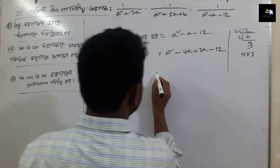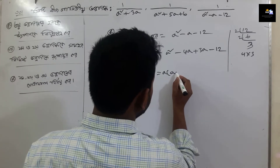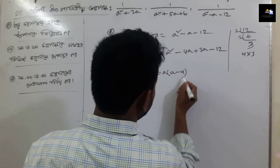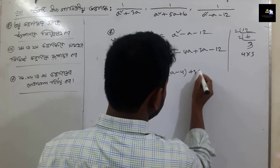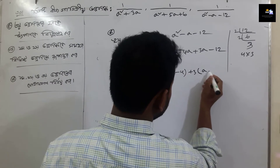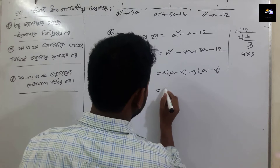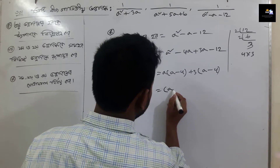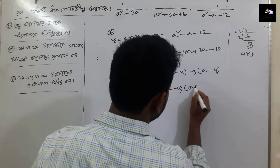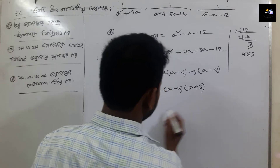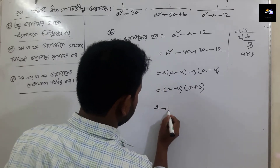Now we have a minus 4, and we have a minus 3. So we have a minus 3. This factors as a minus 4 into a plus 3. This is our answer.